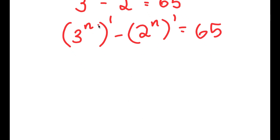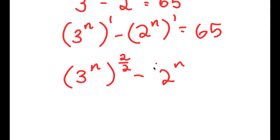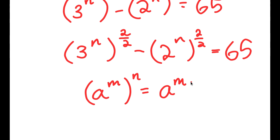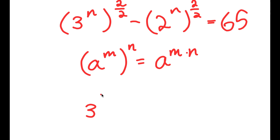Anything to the power of 1 is itself, so 3 to the power of n to the power of 1 is simply 3 to the power of n. Now I'm going to rewrite 1 as 2 over 2 — that's still 1, same exact thing — and I'm going to do the same for 2 to the power of n. So using the property that a to the power of m to the power of n equals a to the power of m times n, n times 2 over 2 gives us 3 to the power of n over 2, all to the power of 2.